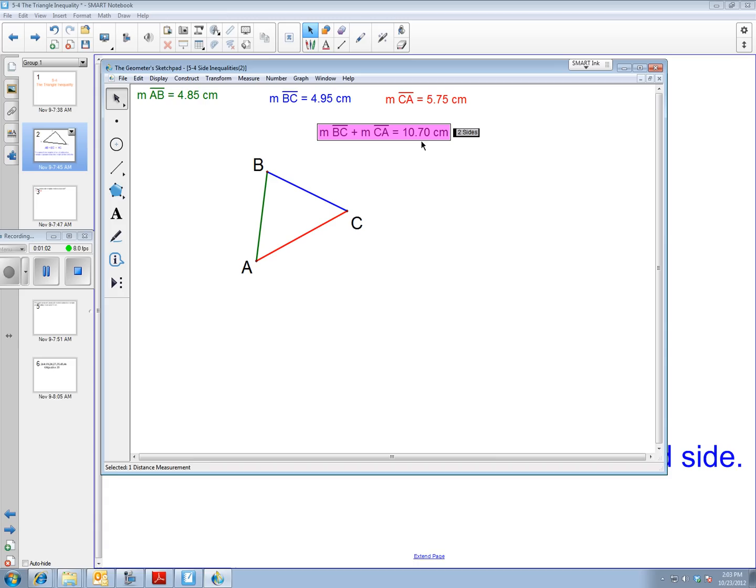Notice how they are 10.7 centimeters long. What I want to know is, are BC and CA longer than the green segment, no matter what I do? If I get them really big, obviously that's not going to prove anything.